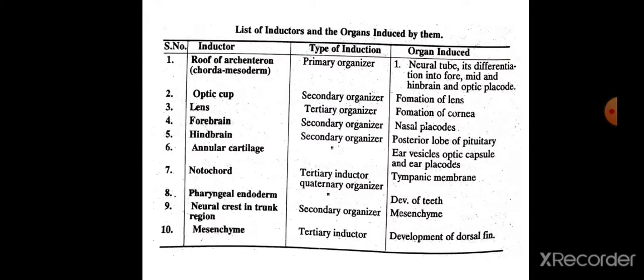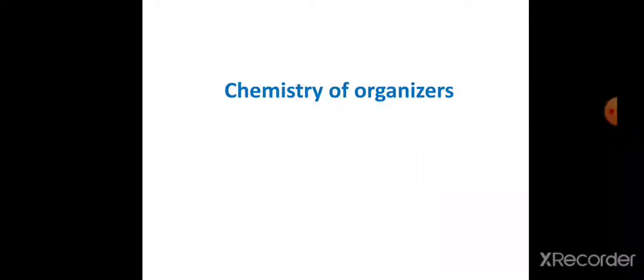A table provides different examples of what organs can act as inductors, what kind of induction they perform, and what organ is induced. Now, so far we have discussed the transplantation experiments; next we will try to understand the chemistry — why only those particular few cells of the gray crescent turn into an organizer.